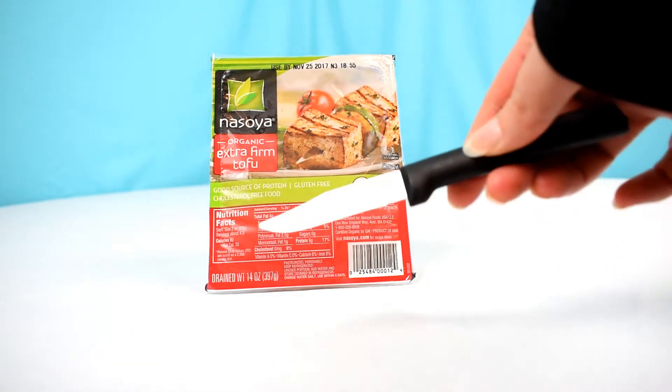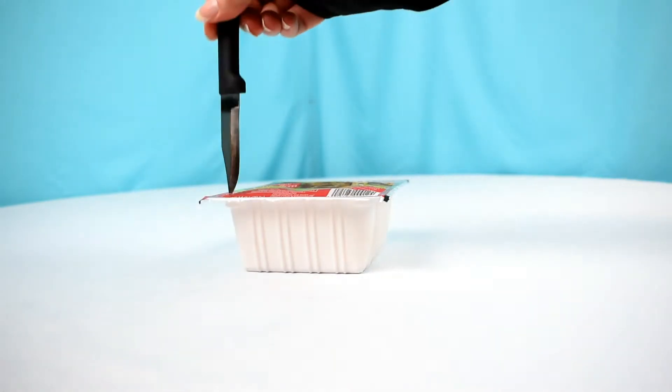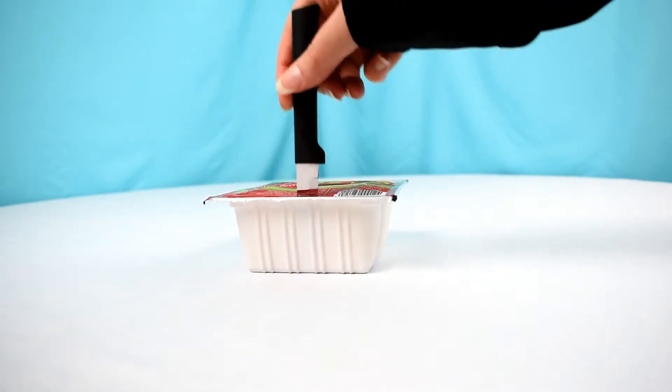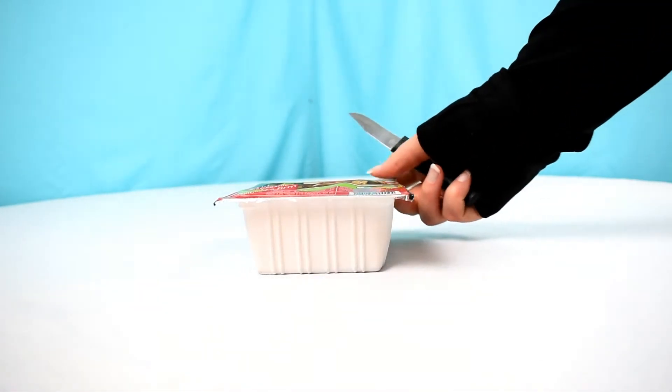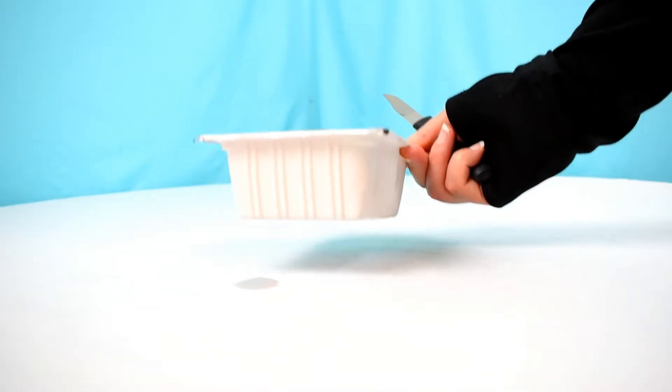So this is the type of tofu that is most commonly available in most supermarkets. Yes, there is water inside of there. If you think that there's water, you are correct. And we're actually going to drain that out. So I'm stabbing it and we're going to drain it out. I spilled some. Oh no.